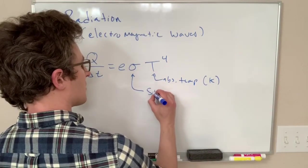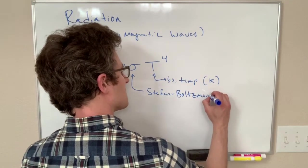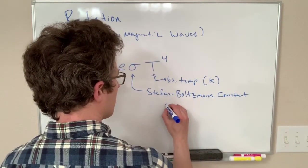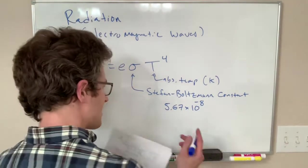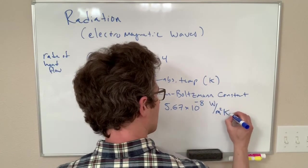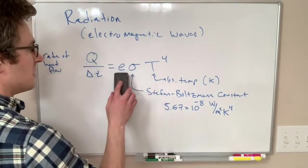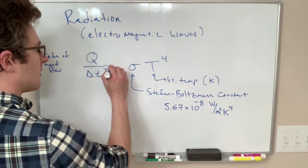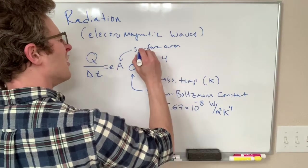Sigma here is a constant called the Stefan-Boltzmann constant, not to be confused with the Boltzmann constant. Stefan-Boltzmann constant is equal to 5.67 times 10 to the minus eight—five six seven eight, that's how everyone remembers it. True story. Watts per square meter kelvin to the fourth. And this is wrong, there should be a factor of area in here also. So this is the surface area of the object.